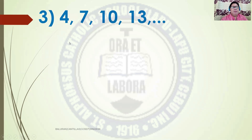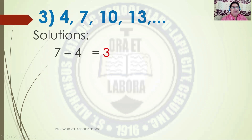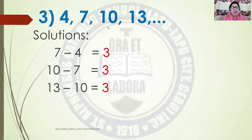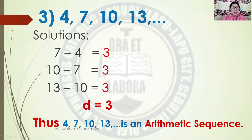Number 3. The terms of the sequence are 4, 7, 10, 13, and so on. Taking the difference: 7 minus 4 is 3, 10 minus 7 is 3, 13 minus 10 is 3. Therefore, we have a Common Difference of 3, so we consider the given sequence an Arithmetic Sequence.